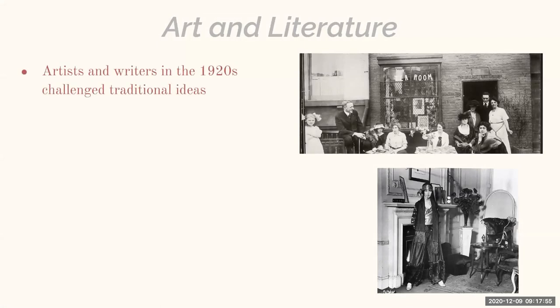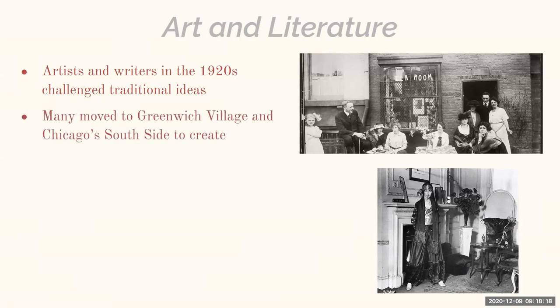We're going to start with art and literature. Artists and writers in the 1920s challenged many of the traditional ideas in art and society, and a lot of them moved to places like Greenwich Village or Chicago's South Side to create. Greenwich Village also became a safe haven for the LGBTQ community in the 1920s — it became a hub of art, creativity, and people exploring new boundaries, whether in art, social behaviors, or identity.